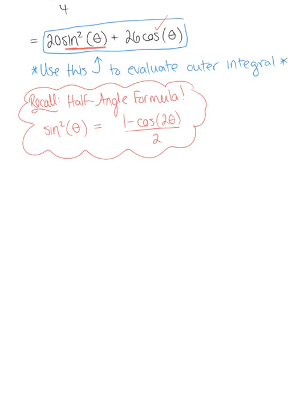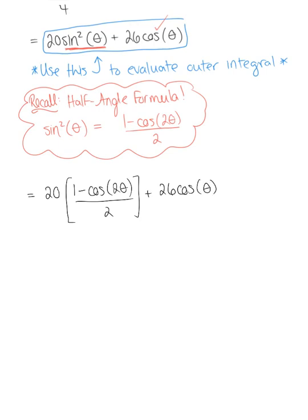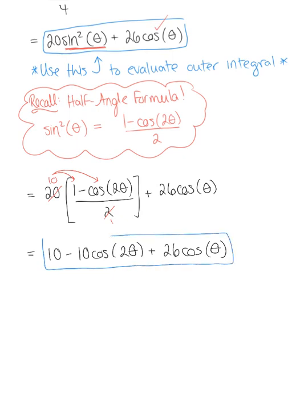Applying the half-angle formula, 20 sin²θ becomes 20 · (1 − cos 2θ)/2. Since 2 goes into 20 ten times, distributing gives 10 − 10 cos 2θ. So the full expression is 10 − 10 cos 2θ + 26 cosθ. Note that the arguments of the trig functions are different, so we cannot combine them.